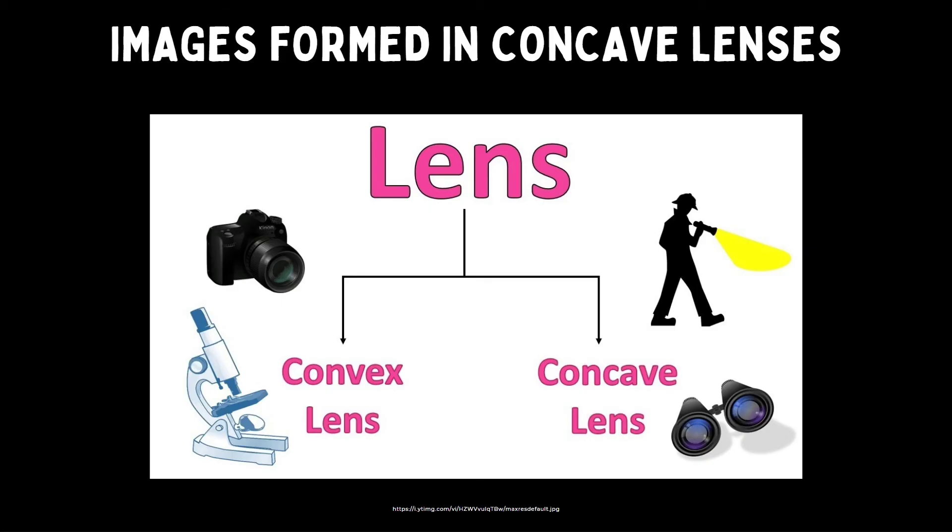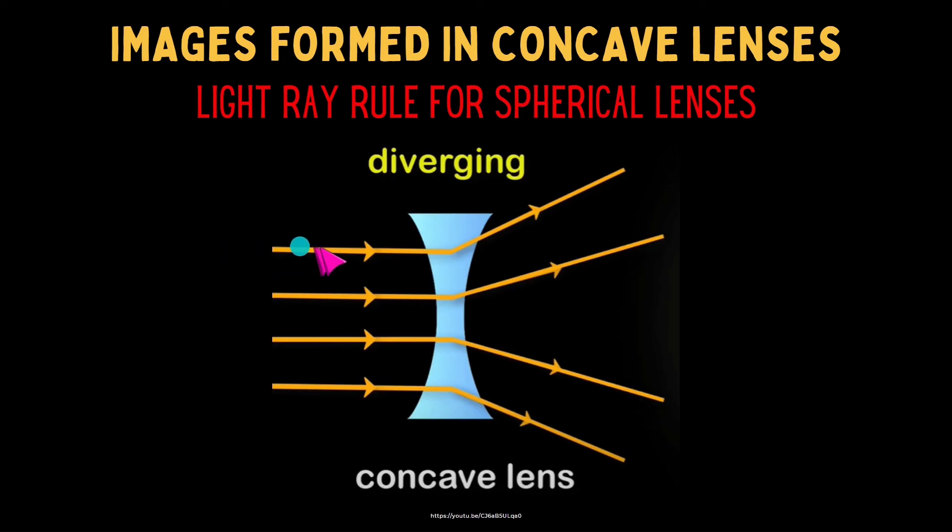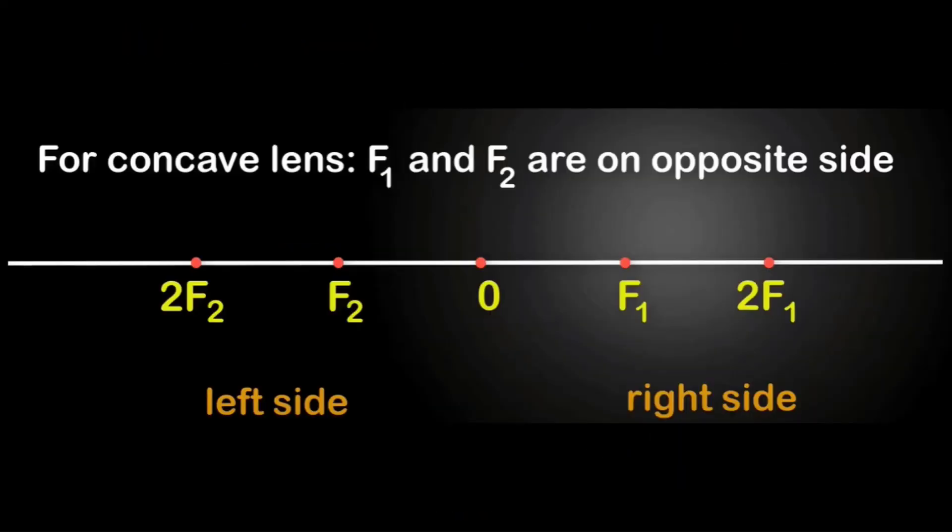Our next topic to discuss is how images are formed in concave lenses. Concave lenses are diverging. When light ray hits the concave lens, there will be diverging. There is no converging happening. Before we give an example of locating images in concave lenses, what do you notice about the ray diagram of concave lenses?